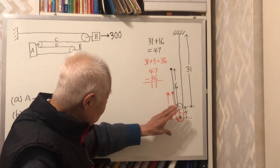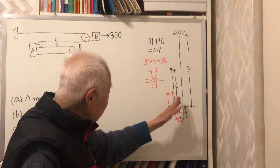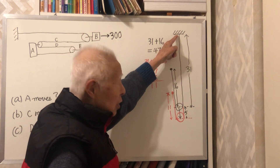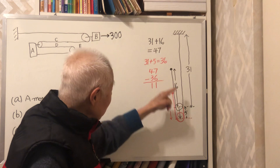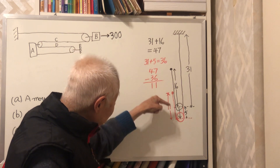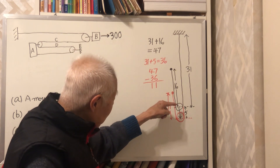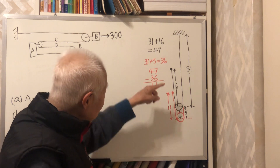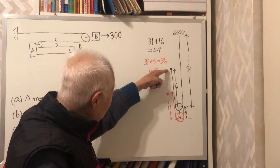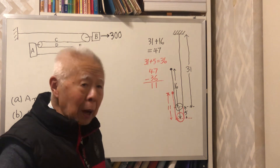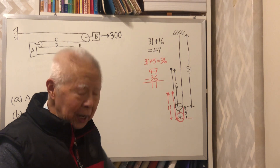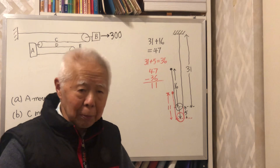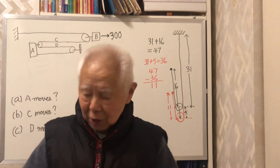You have a pulley where one side of the loop is fixed and the other end can move. If you pull the pulley down by x, then the moving terminal will move down by 2x. Remember that — it's double the pulley movement.